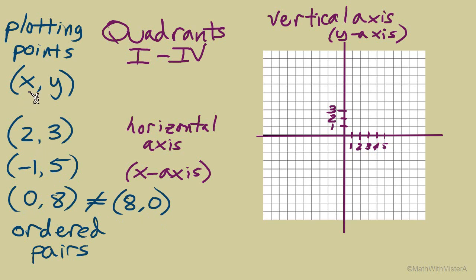The way we plot these points is suggested by how we write the ordered pair: x, y. The first number is plotted on the x-axis and the second on the y-axis. To plot (2, 3), we find 2 on the x-axis and 3 on the y-axis, and there is a point that represents both values at the same time — moving 2 units to the right on the horizontal axis and 3 units up on the vertical axis. Do both of those moves and plot the point.